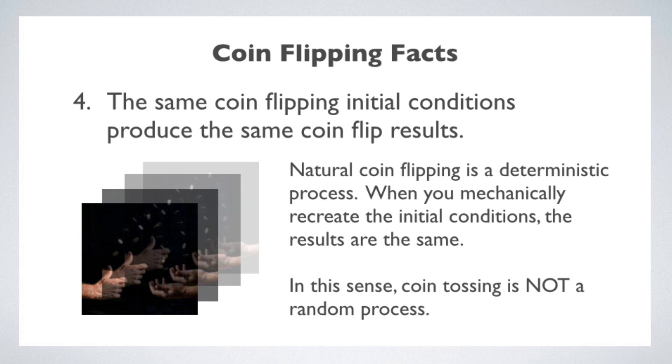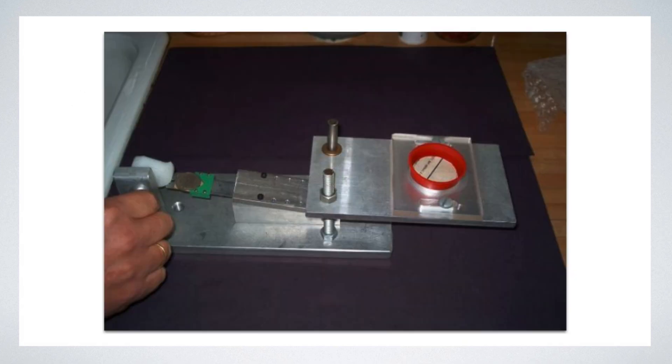Fact number four. The same coin flipping initial conditions generally produce the same coin flip results. In other words, coin flipping is largely governed by deterministic laws, and when you mechanically recreate the initial conditions of a coin toss with some precision, then the results are the same every time you toss the coin. Here's a picture of a device that can recreate the initial conditions of a coin toss. It's a device that Diaconis and his colleagues used in their study of bias in coin tossing. The coin is placed on the arm on the left, a specific tension is set, and the coin is released. It flies upwards in an arc, flipping over and over, and it lands on the bottom of the red cup on the right. Increasing the tension gives you a higher arc with more rotations. Diaconis and his colleagues reported that in practice, the same initial conditions gave the same result every time.